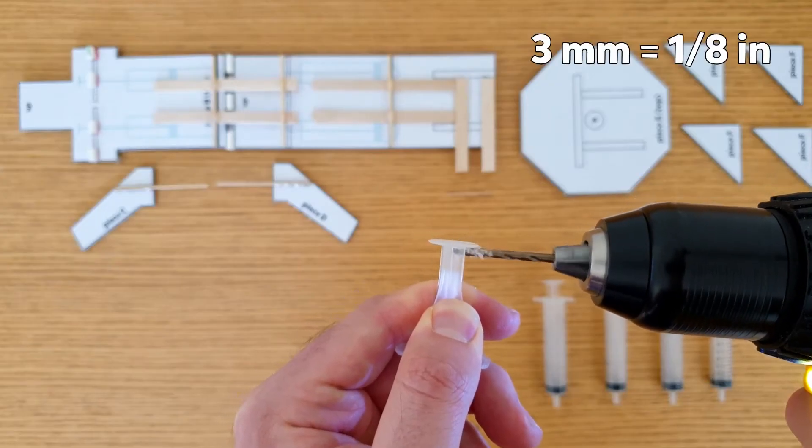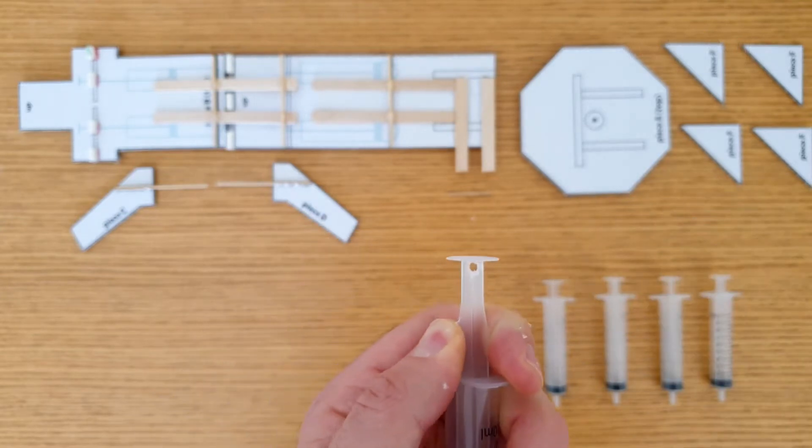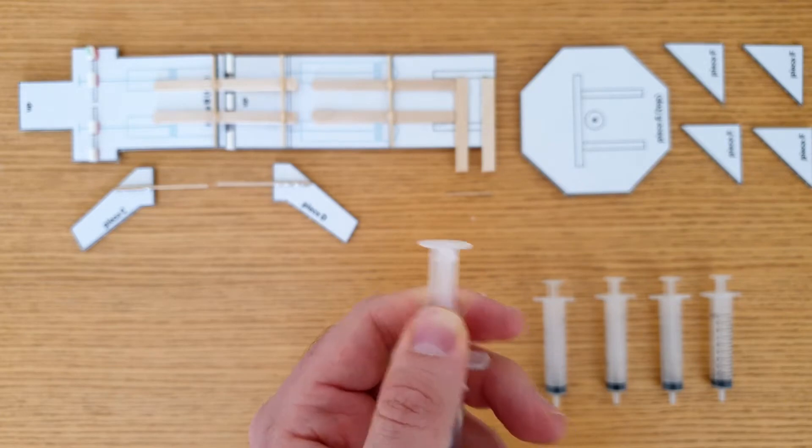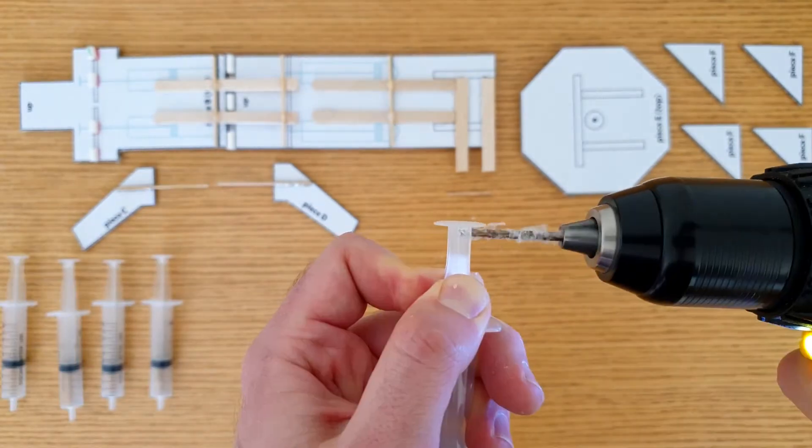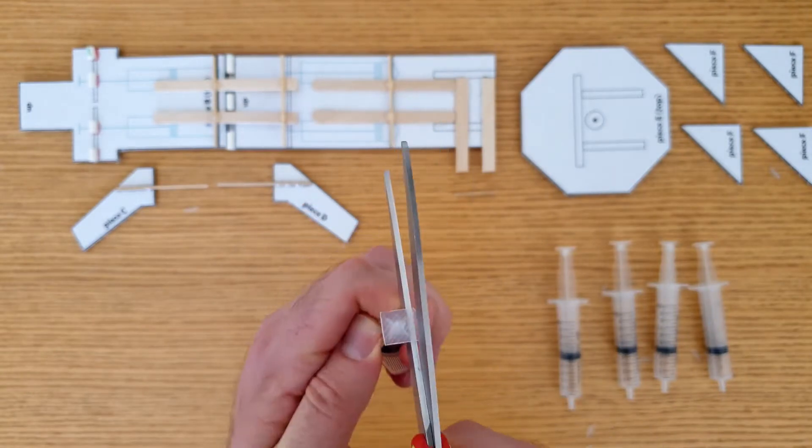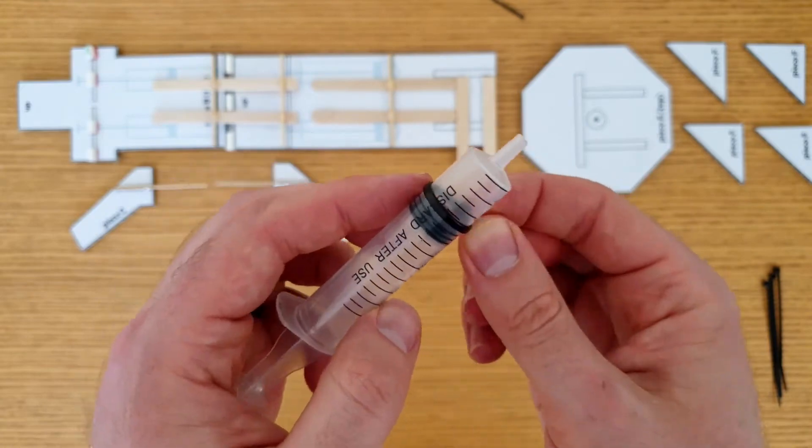Next, drill or poke a 3mm wide hole through the plunger of a 10ml syringe. Try to make the hole as close to the top as possible. Repeat this for another 4 10ml plastic syringes. And then cut off these extra bits of plastic. Tie zip ties around the ends of these 5 plastic syringes.